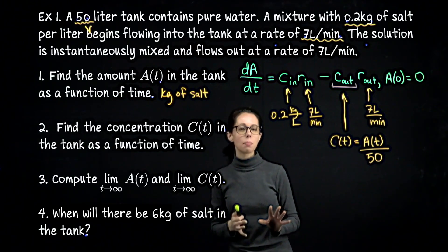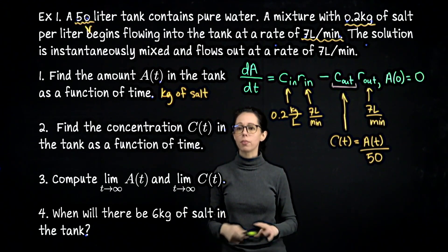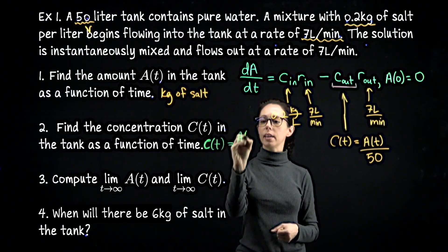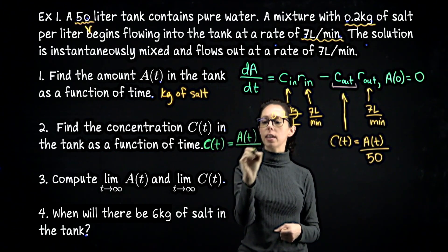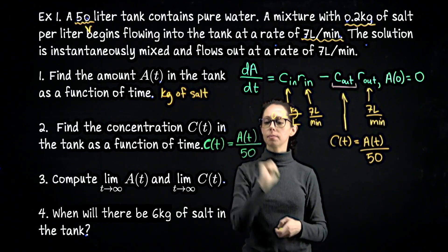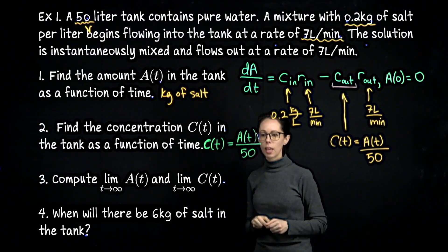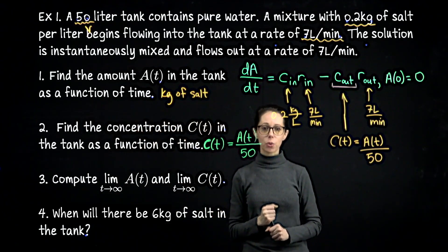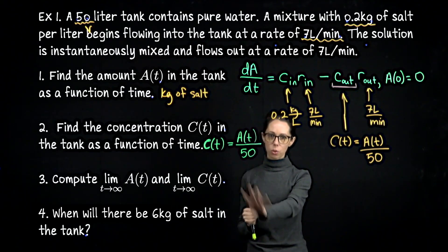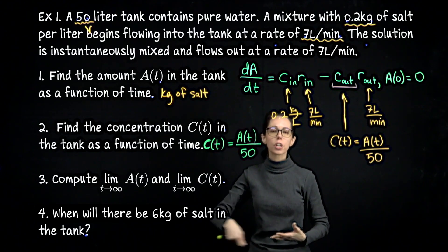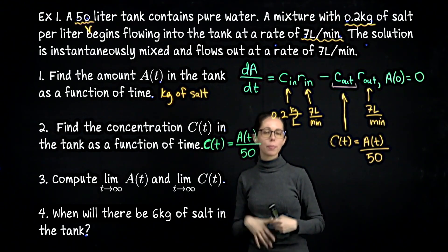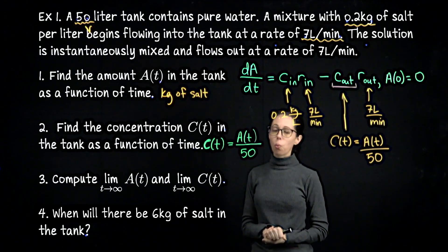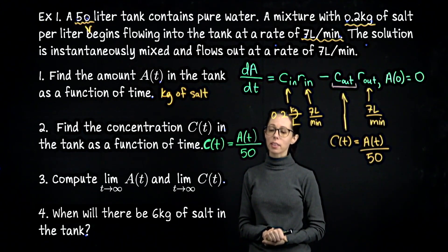The next exercise is to take the limit of each function as t goes to infinity. I claim we can already reason this out: if you keep adding a salty mixture and draining, the saltiness keeps increasing but will never exceed the concentration of what we're putting in. So we expect the limit of concentration as t→∞ to equal 0.2 kilograms per liter — the incoming concentration.